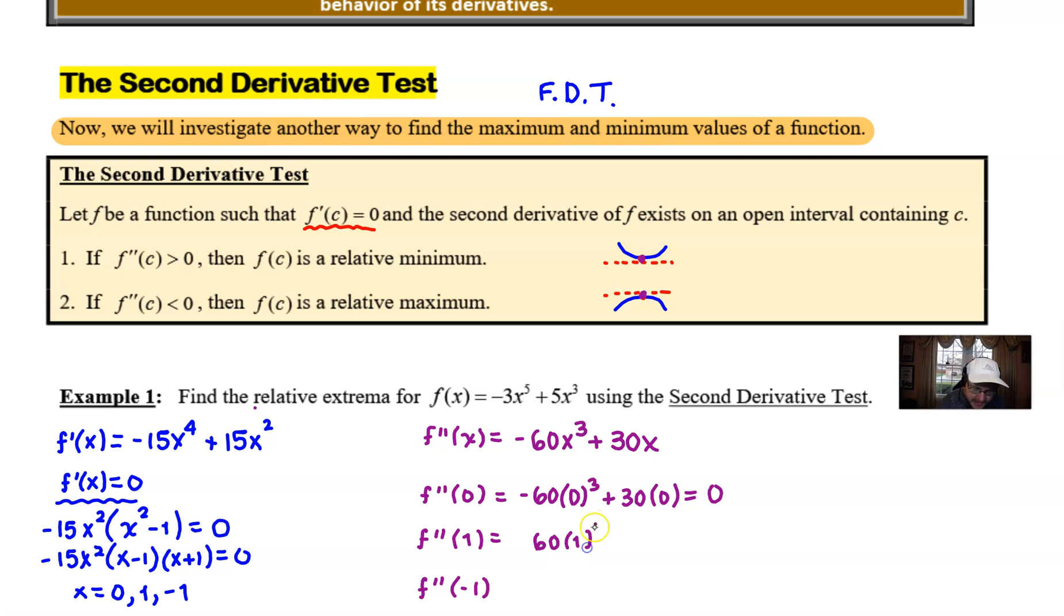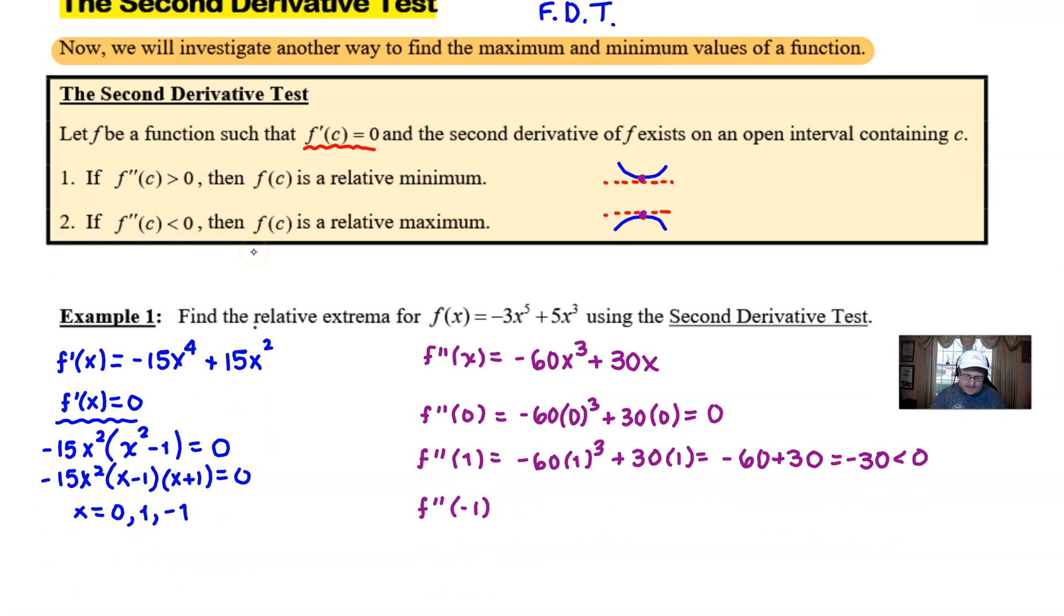Plugging in one for the x will give you -60(1)^3 + 30(1) which I believe is -60 + 30, and that of course is -30 which no doubt is a negative number. So you look at this and you can conclude from the Second Derivative Test that you've got yourself a relative maximum. f(c) is a relative maximum, and so we can go ahead and make that as part of our answer.